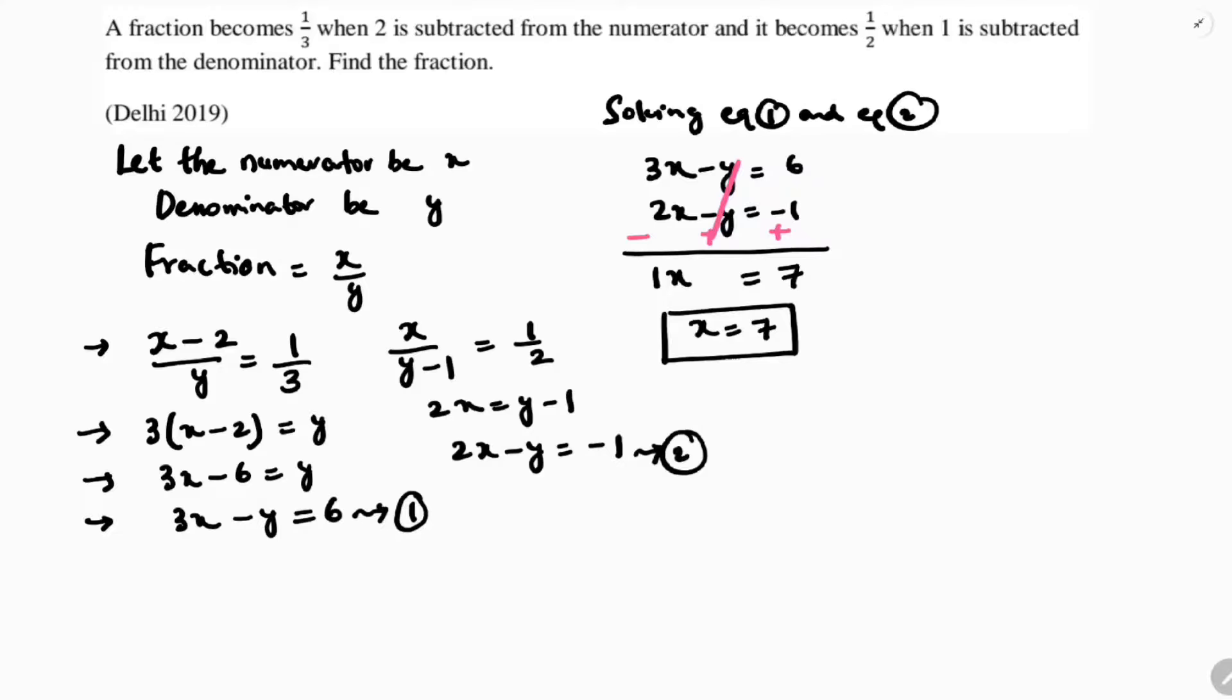Now, if I substitute this x value in the first equation, 3x minus y is 6. So 3 times 7 minus y is 6. 21 minus 6 equals y. So, 21 minus 6 is 15. The value of y is 15.